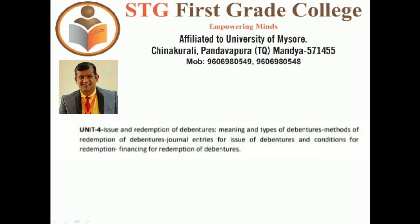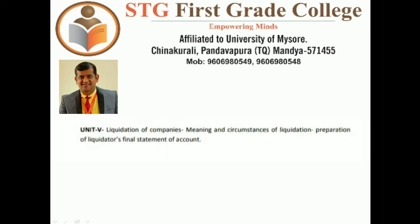Unit 5 is Liquidation of Companies. Liquidation is the closing down or shutting down of a company. We will learn the meaning of liquidation, circumstances of liquidation, and preparation of the liquidator's final statement of accounts, which is a normal ledger account format. Notably, no journal entries are passed in this unit.